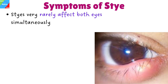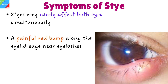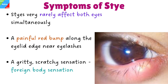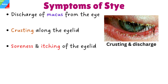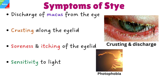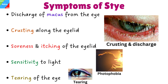What are the symptoms of stye? Styes very rarely affect both eyes simultaneously. Typically, a person will have one stye in one eye. However, it is possible to have more than one stye in the same eye or one in each eye. Signs and symptoms of a stye include a painful red bump along the eyelid edge near eyelashes, a gritty scratchy sensation as if there is a foreign body in your eye, discharge of mucus from the eye, crusting along the eyelid, soreness and itching of the eyelid, sensitivity to light, and tearing of the eye.